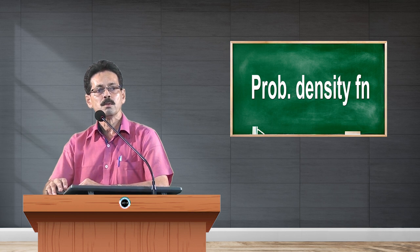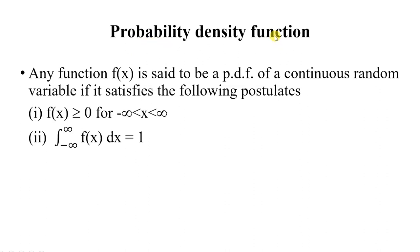So first of all, what do you mean by probability density function? As you know, probability mass function is a probability distribution of a discrete random variable. On a similar manner, probability density function is the probability distribution of a continuous random variable. Any function f(x) is said to be a probability density function — in short form, called a PDF — of a continuous random variable if it satisfies the following postulates or conditions.